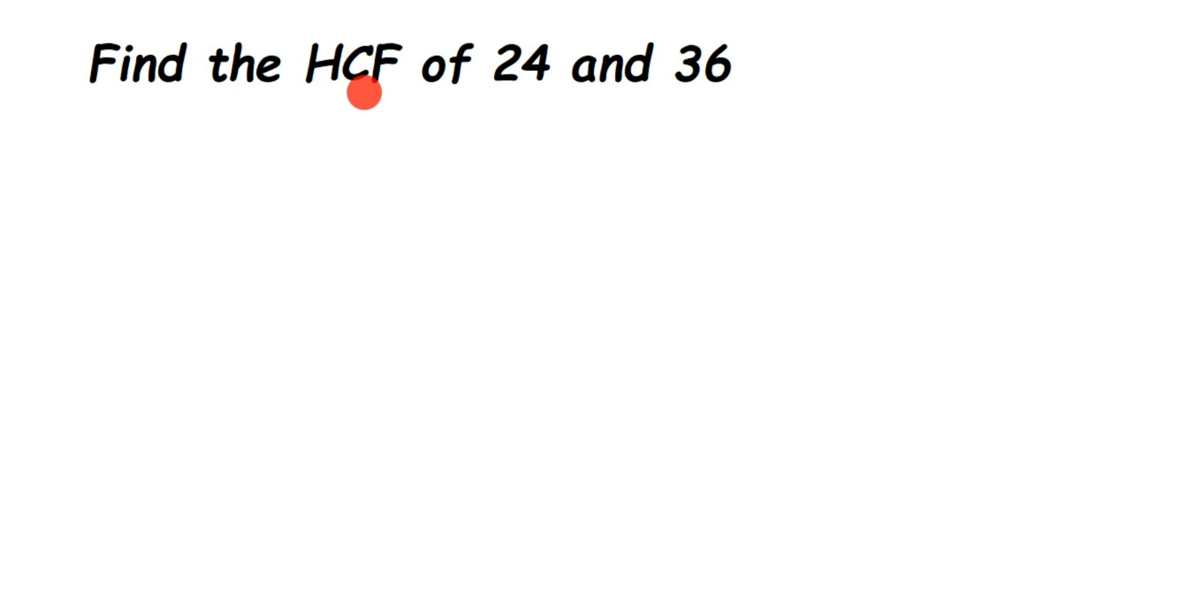Here I'm going to explain using the prime factorization method. For this method, we have to do prime factorization of both numbers separately. We're going to draw lines like this - a horizontal line and vertical line this way. First I'm going to do 24, and second I'm going to do 36.